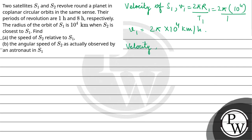Similarly, velocity of S2: V2 = 2πR2/T2. With R2 = 4 × 10^4 and T2 = 8, V2 = π × 10^4 km/h.